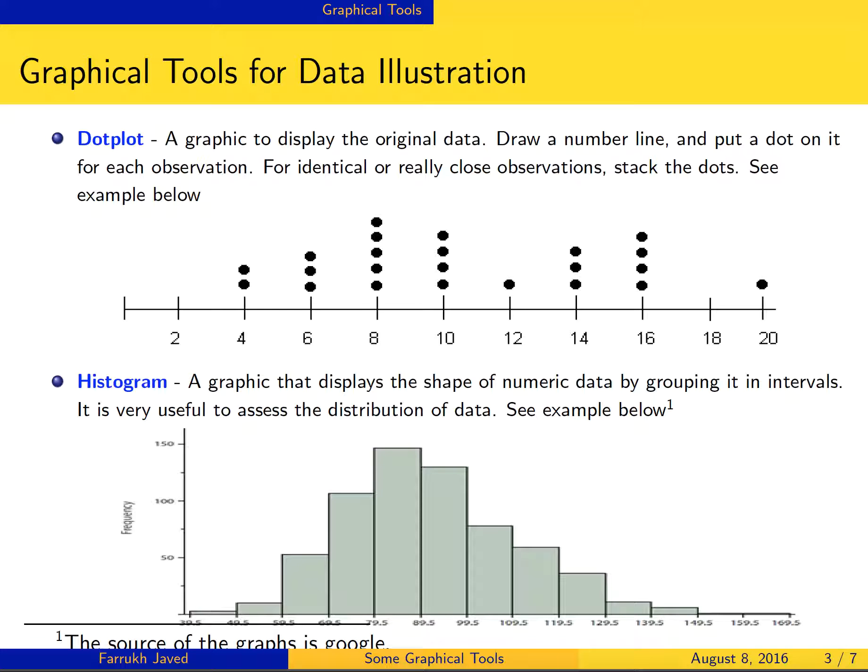The dot plot is the most basic and classic graphical method. It's used to display the original data. How do we do that? Draw a number line and put a dot on it for each observation. If you have data ranging from 2 to 20, you draw a number line 2, 3, 4, 5, 6, 7, 8 up to 20.